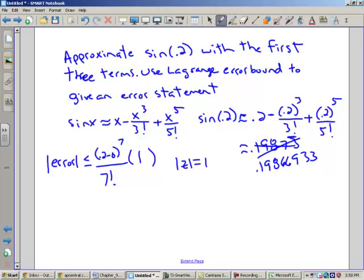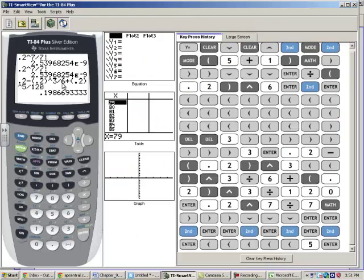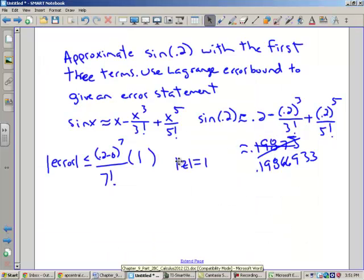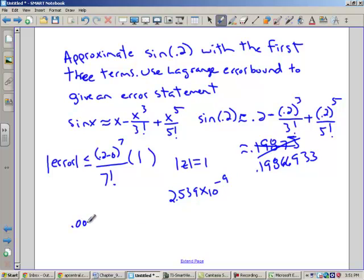So now we go back and we type in what this actual error statement, which was 0.2 to the 7th divided by 7th factorial. And that works out to be this value 0.000000253968254. So 2.539 times 10 to the negative 9th, which is pretty small. Let's type that in. 2.539 times 10 to the negative 9th. So let's see if we can expand that. 1, 2, 3, 4, 5, 6, 7, 8. Then 2, 5, 3, 9. So that is what we're saying the error is.